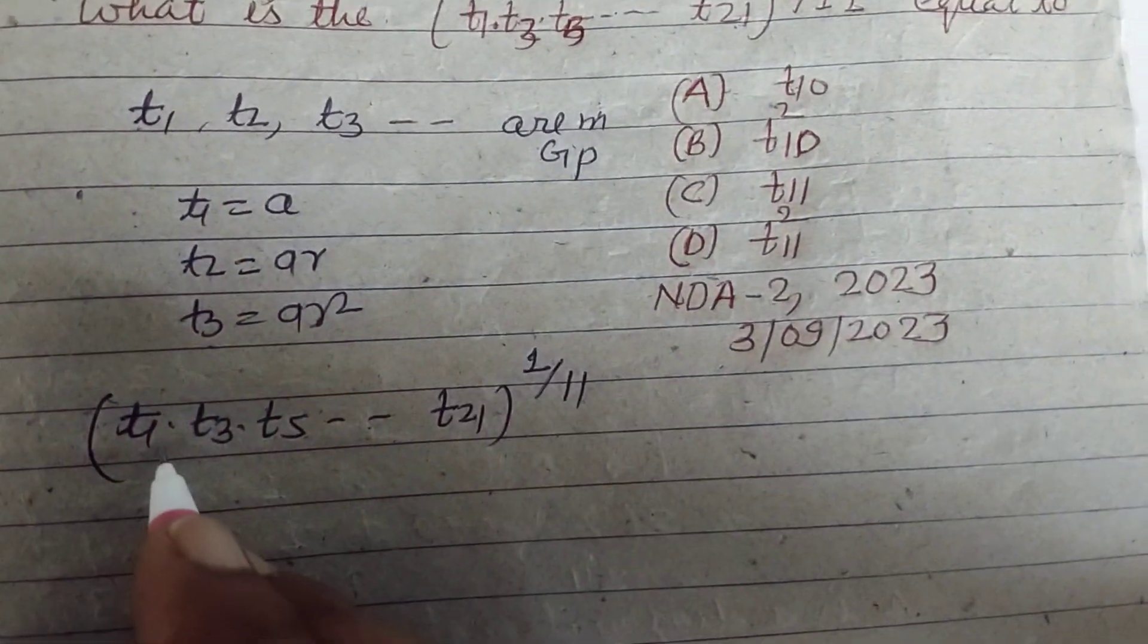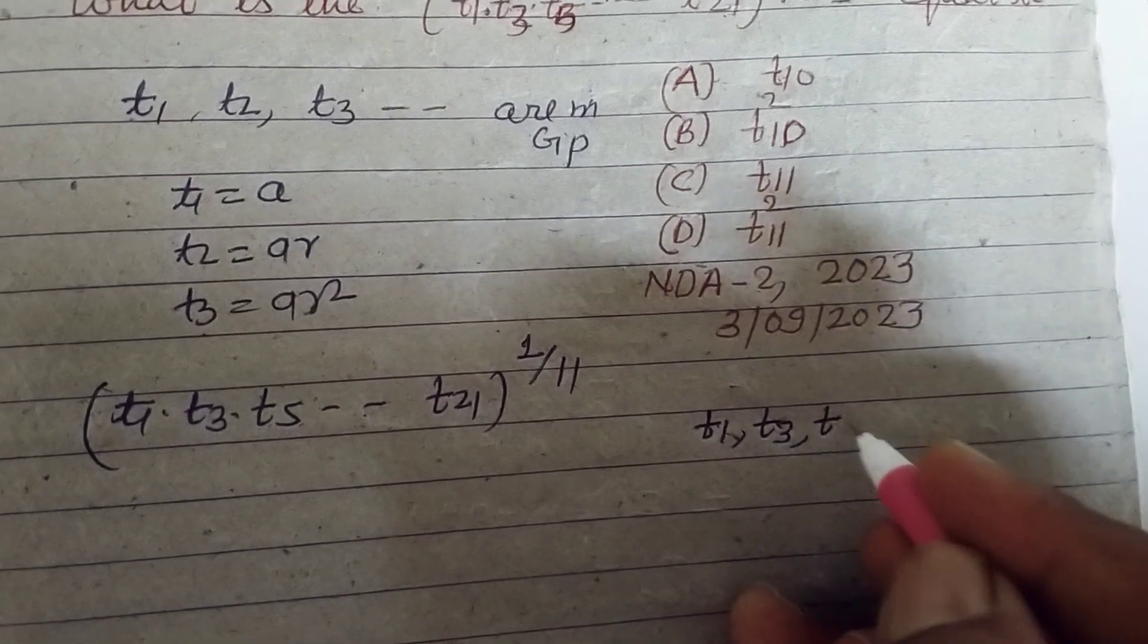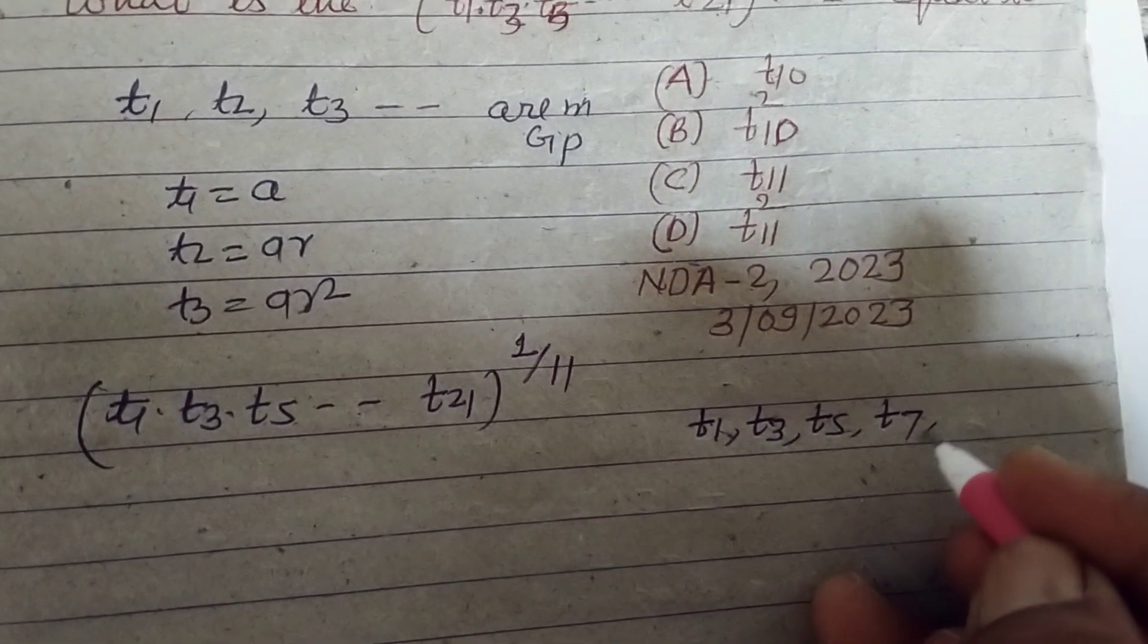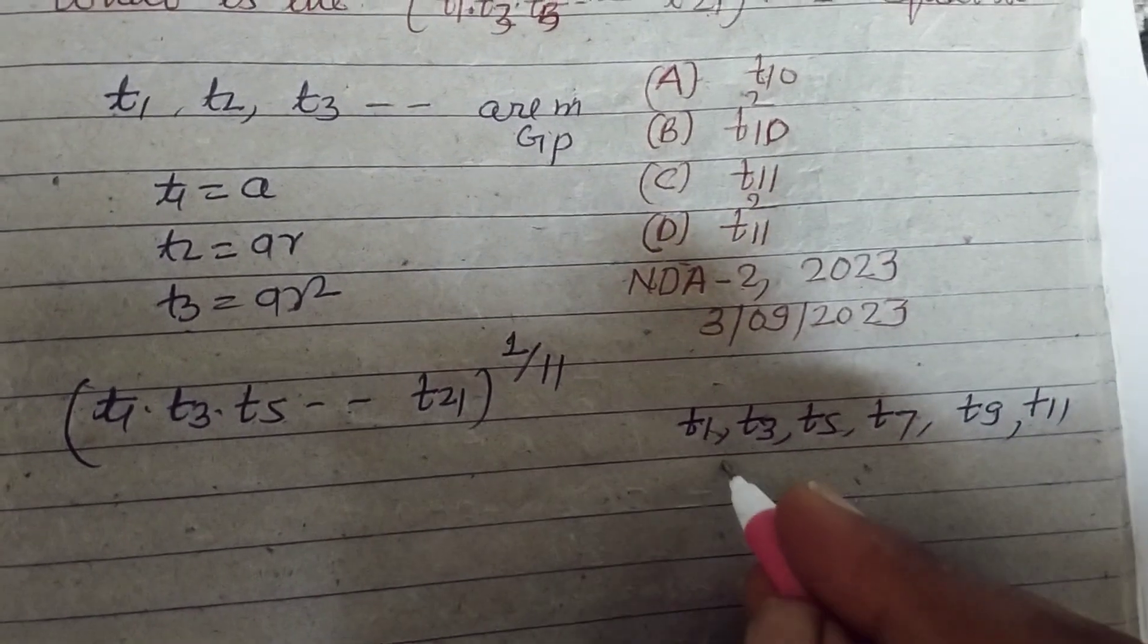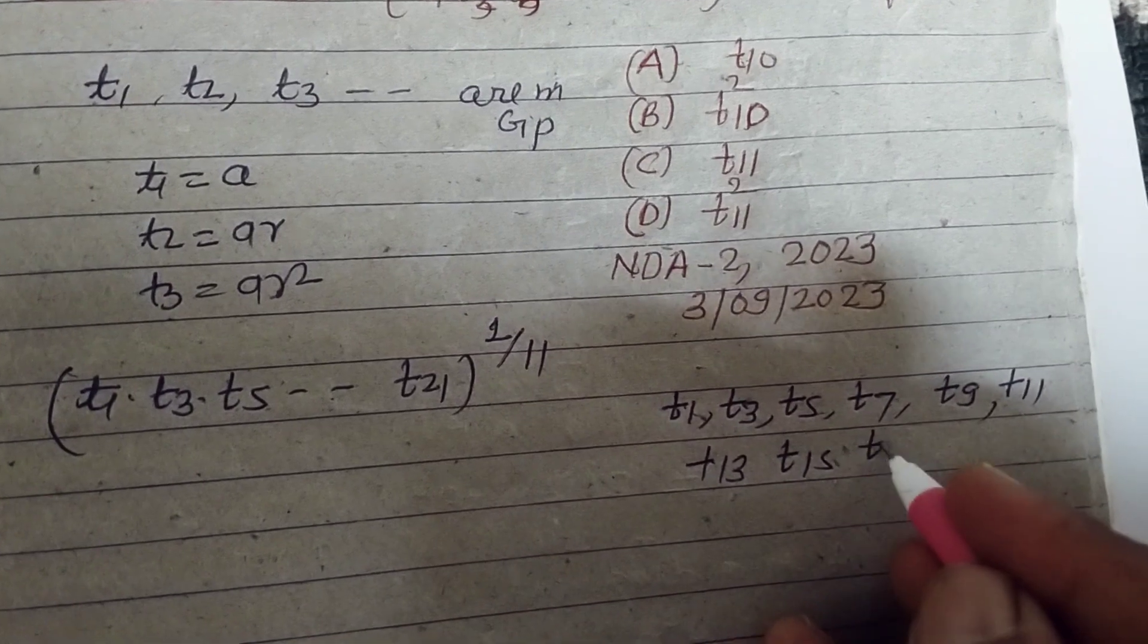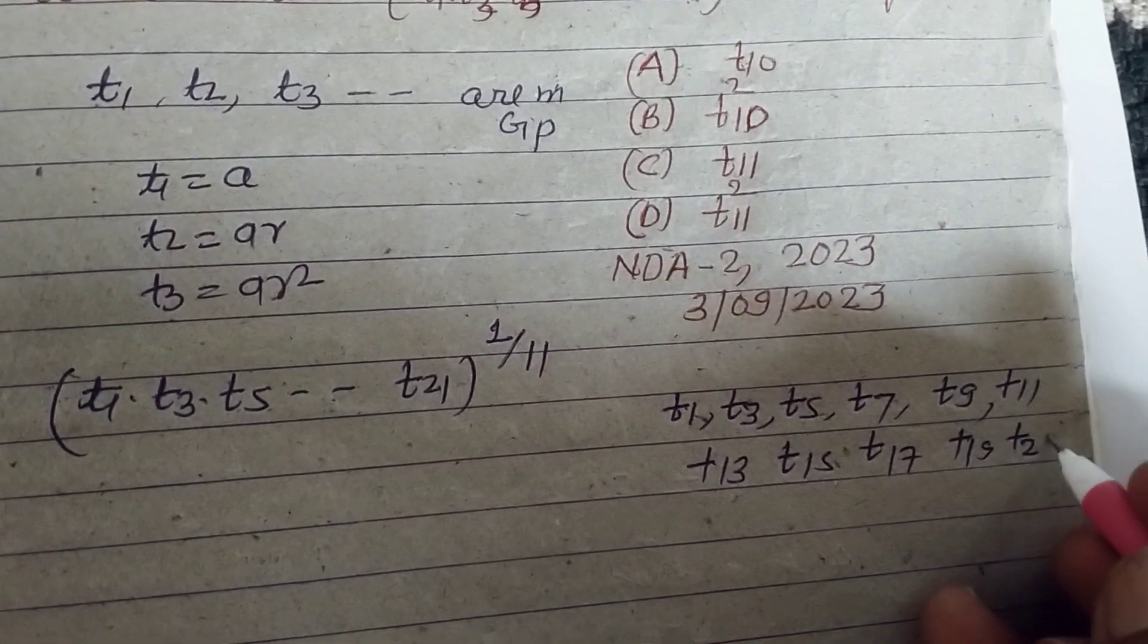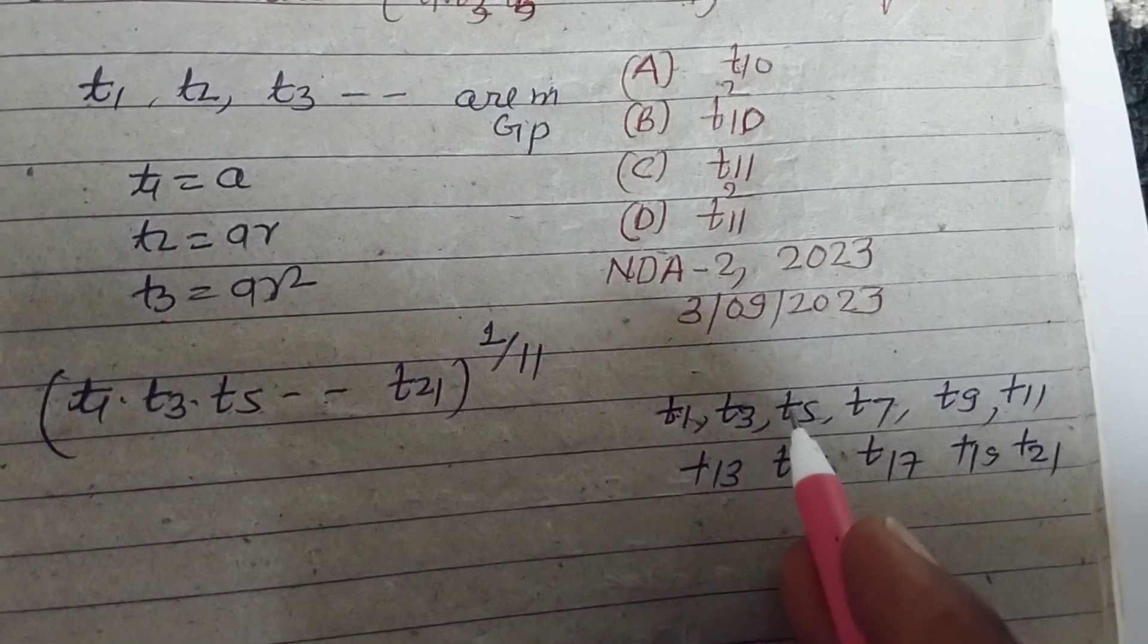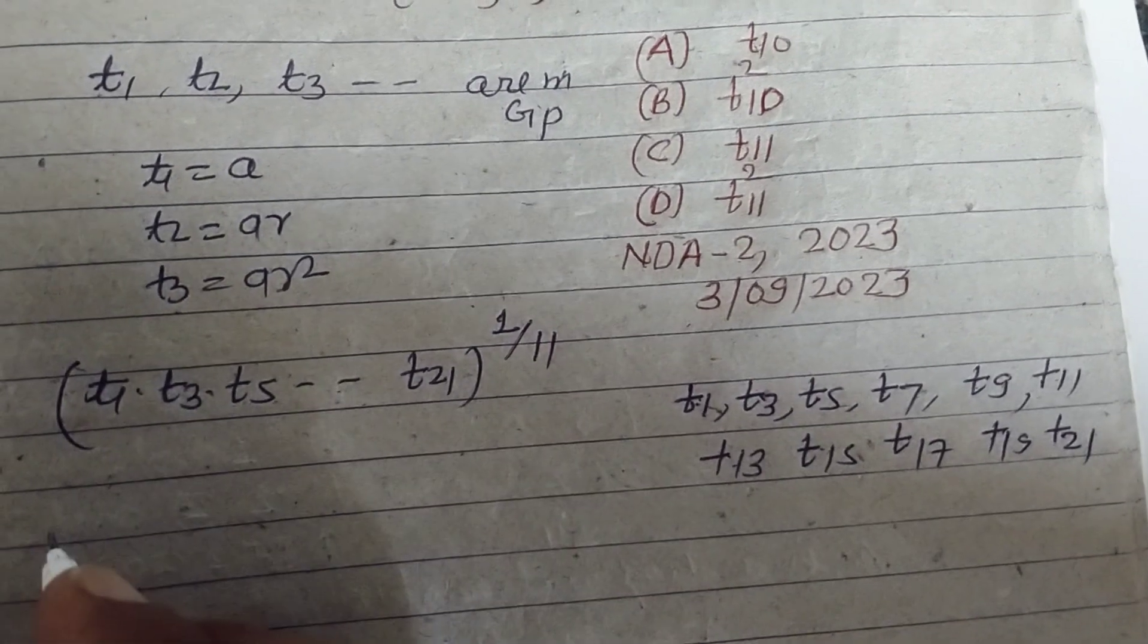Here number of terms is t1, t3, t5, t7, t9, t11, t13, t15, t17, t19, t21. That's 1, 2, 3, 4, 5, 6, 7, 8, 9, 10, 11. These are 11 terms.